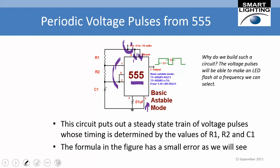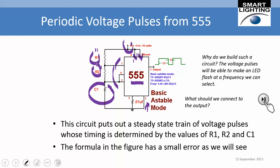What makes this a great device is that it's a timer circuit producing a steady-state train of voltage pulses whose timing is determined by the values of R1, R2, and C. It all has to do with the time it takes to charge C1 through R1 and R2, and then discharge it through R2 only — we'll explain why only R2 is used for discharging in a moment.